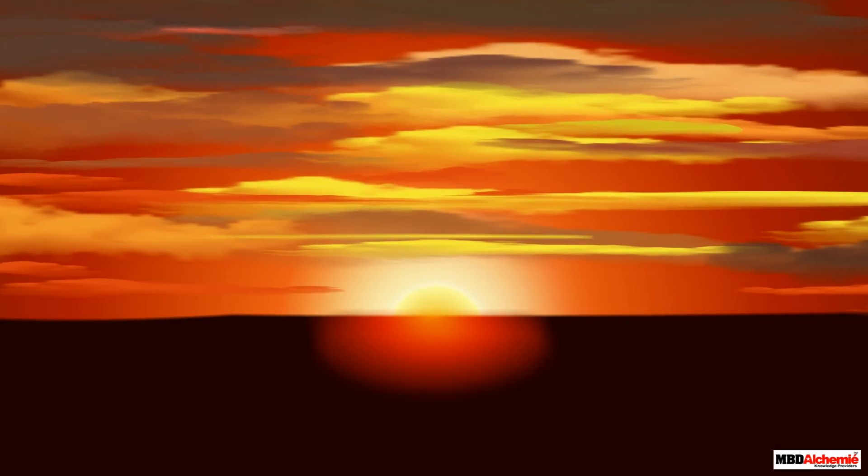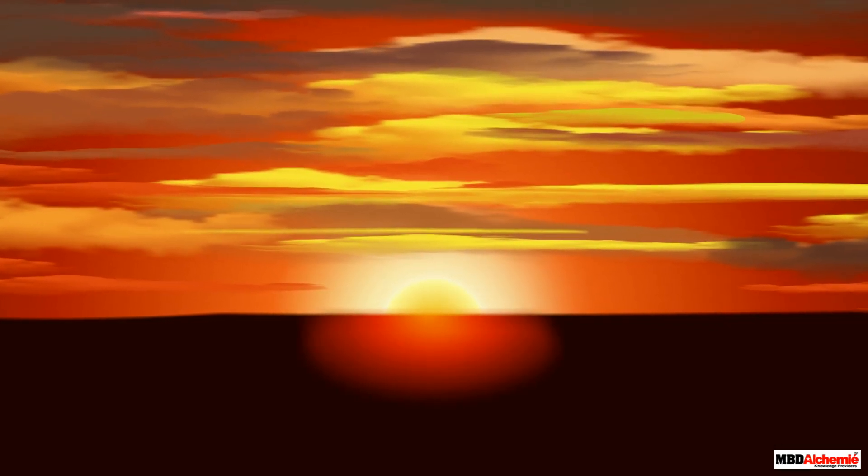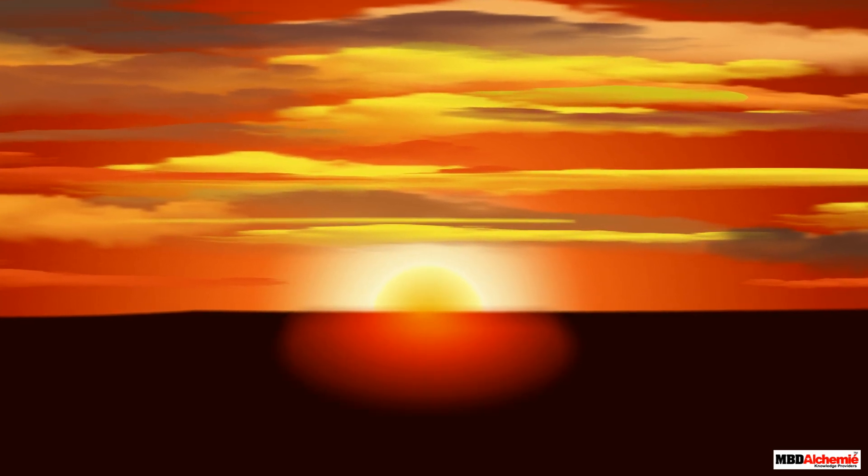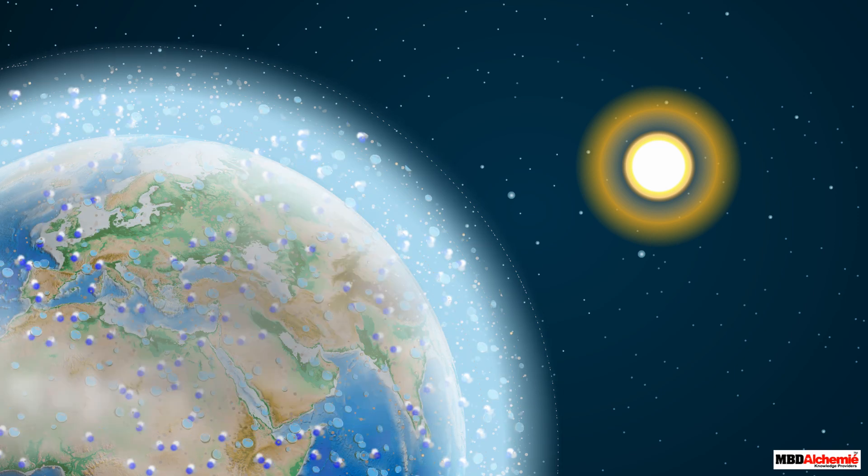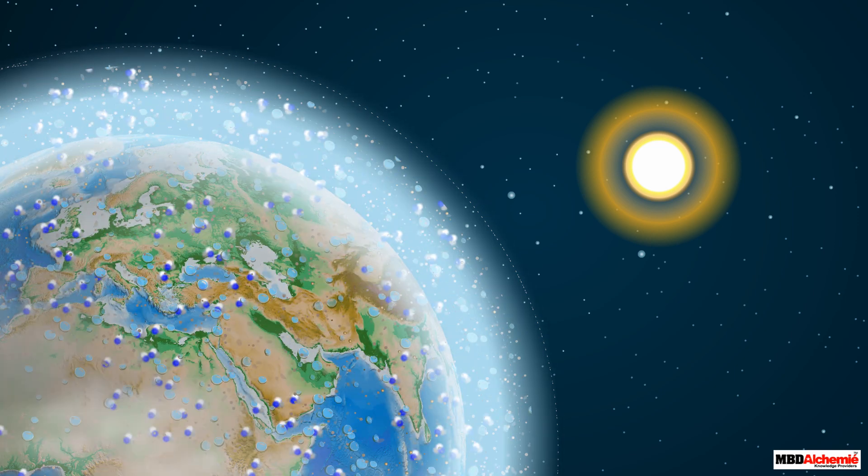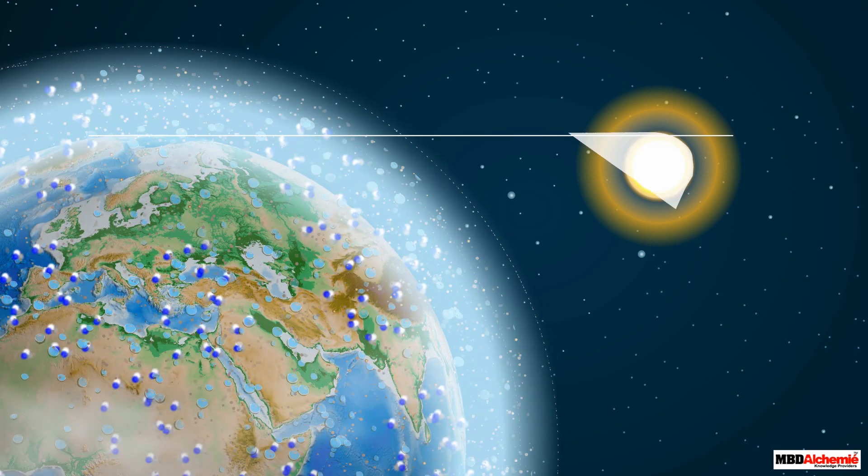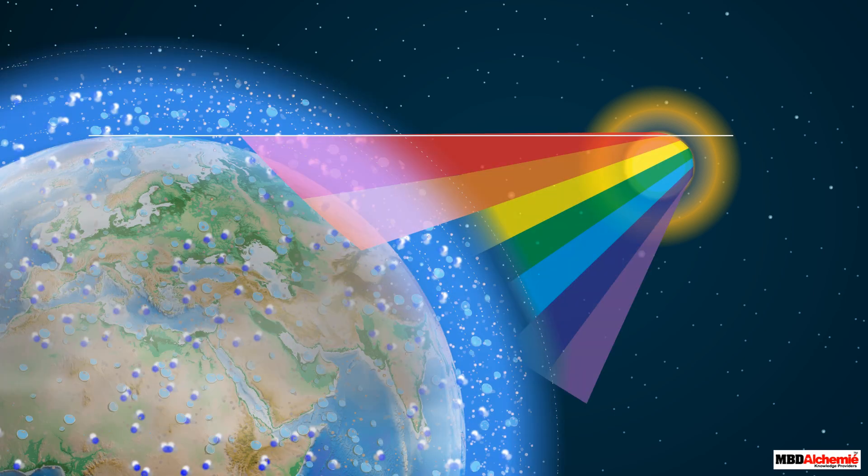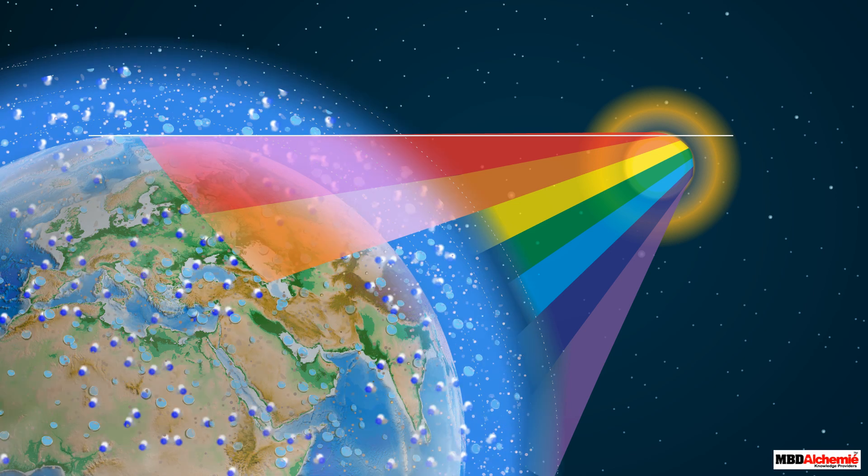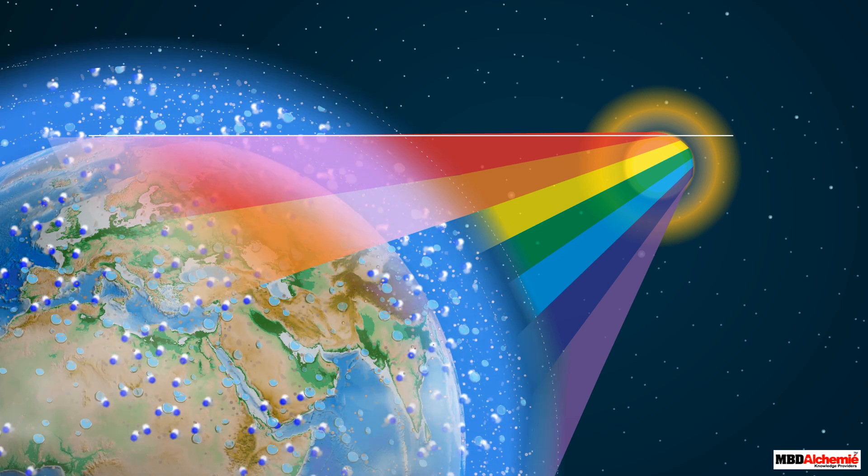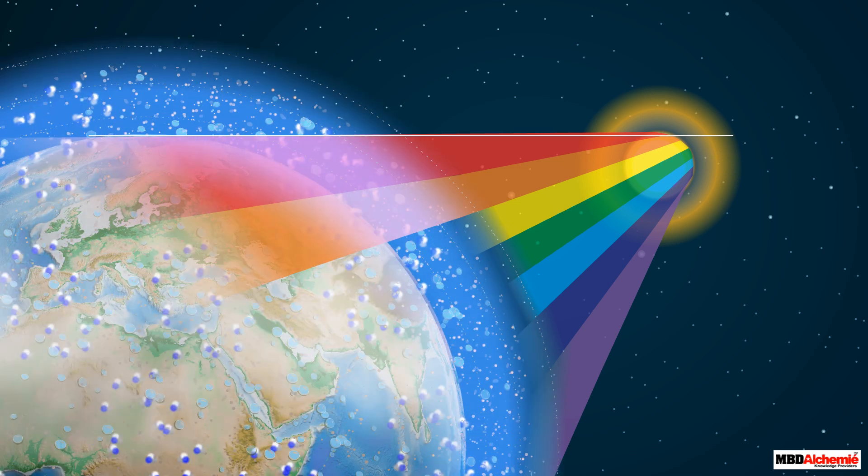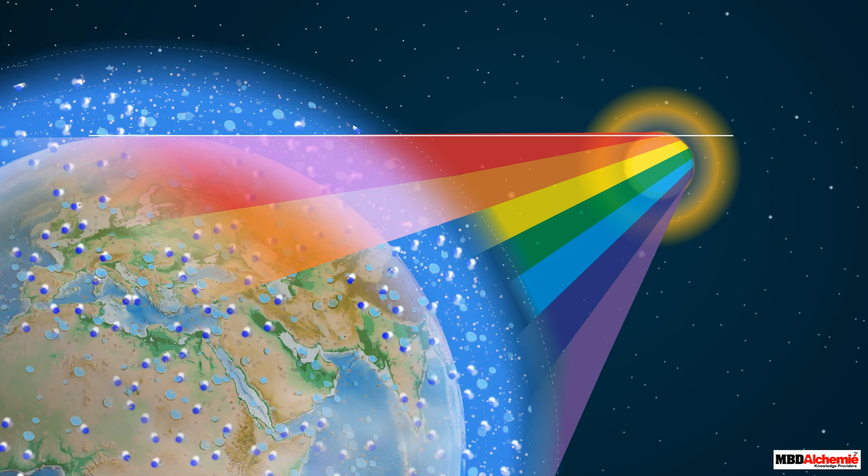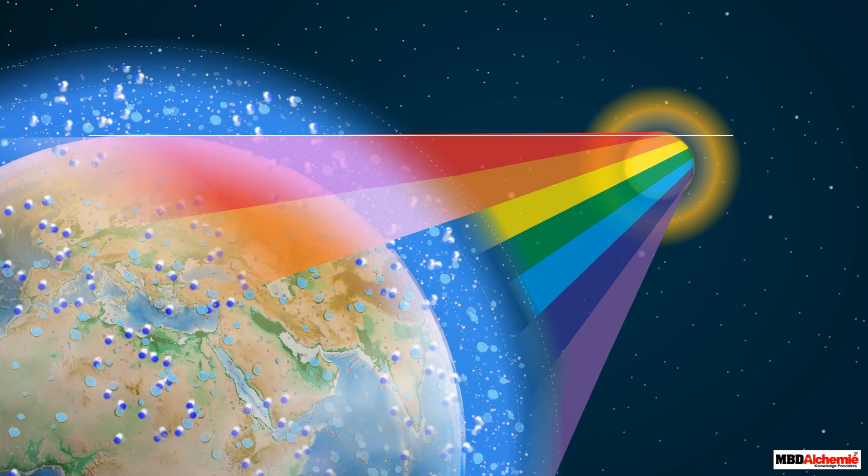Let us now try to understand how scattering of light makes the sun appear red at sunrise or sunset. At the time of sunrise or sunset, the sun is near the horizon. The light from the sun near the horizon passes through a large distance in the Earth's atmosphere before reaching our eyes. While traveling through this large distance, the blue light scatters away in all directions before reaching our eyes.